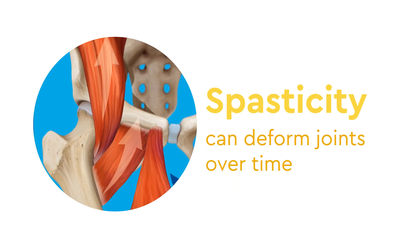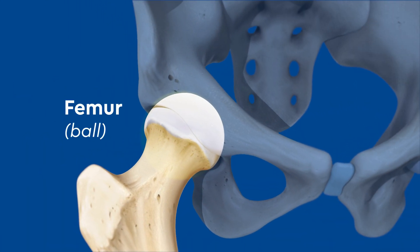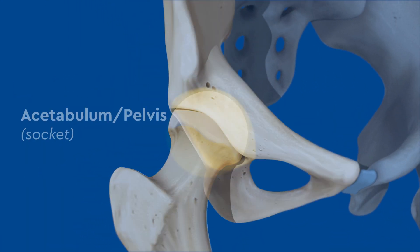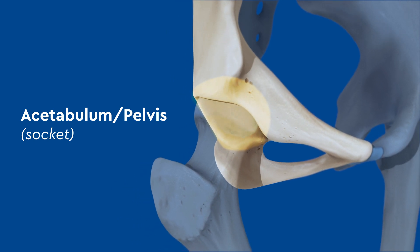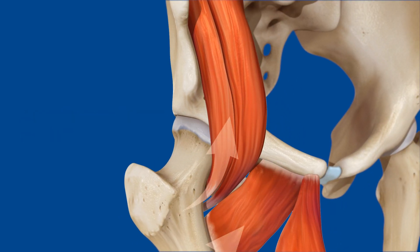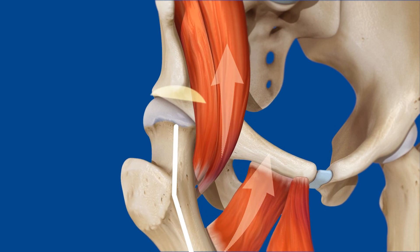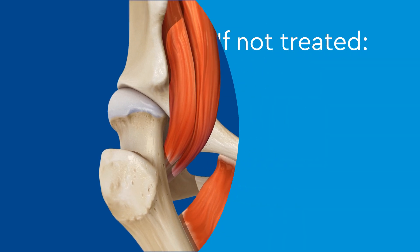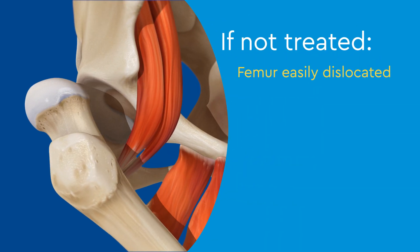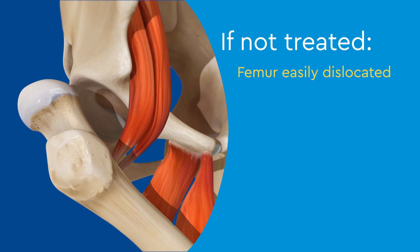Spasticity can deform joints, such as the hip, over time. The hip is made up of your femur, or ball, which fits inside the acetabulum of your pelvis, or socket. Spasticity in the muscles around the hip straightens out the neck of the femur and causes the socket to become shallow. If not treated, the femur can become easily dislocated, especially as the ball deforms over time.